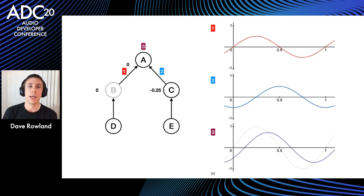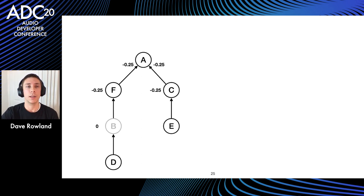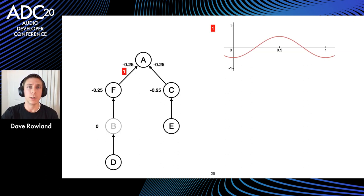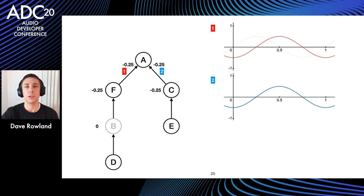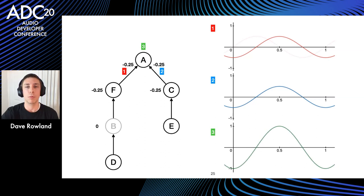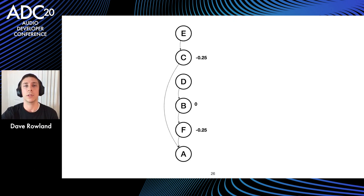We can solve this by changing the topology of the graph — introducing a node that only delays the signal to balance the latency reaching A. We add node F with the same latency as C. Now signal 1 has the same phase shift C was introducing, signal 2 is unchanged, and at node 3 we have amplitude 1 back with a consistent phase shift of 0.25 — the signal is coherent again. We can still do our depth-first search to determine the processing order.